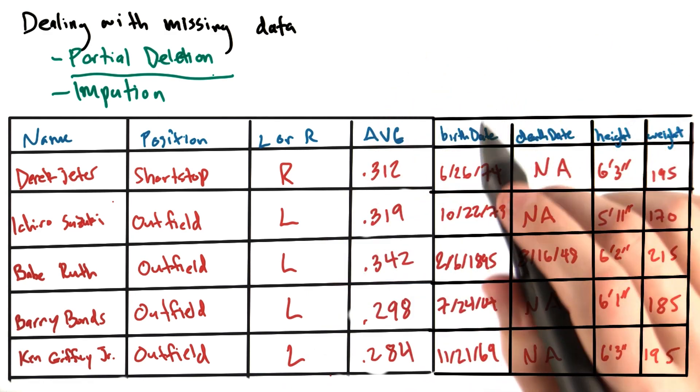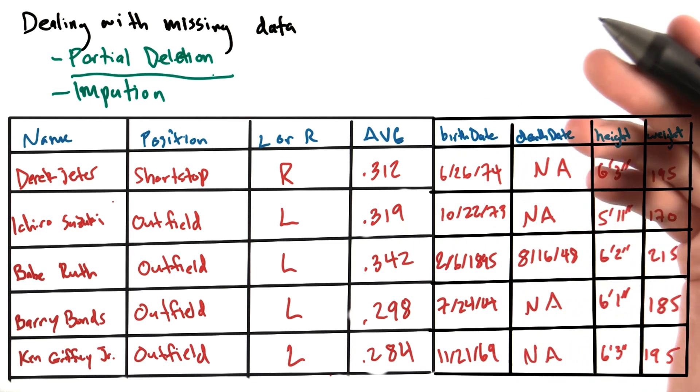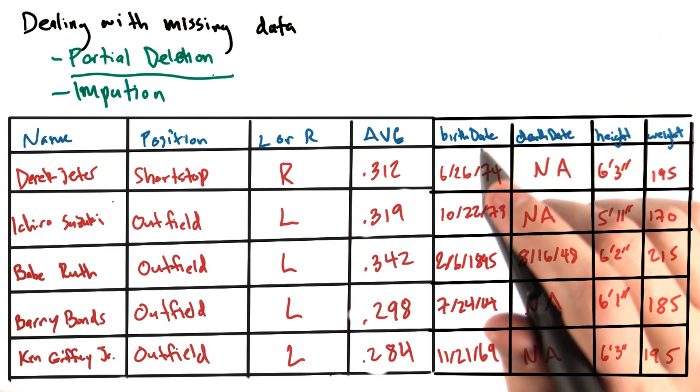For the following discussion, let's use the Sean Lahman database of baseball players. There are a number of players for whom many values are missing.